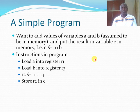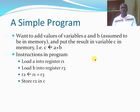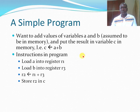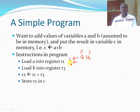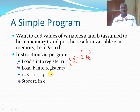Now we shall see how the CPU processes a simple program. We want to add the values of variables A and B, which we assume are in memory, and put the result in variable C in memory. In assembly language, this is written as: add A and B, store in C — meaning add the content of memory location A and the content of variable B, then store the result in variable C.